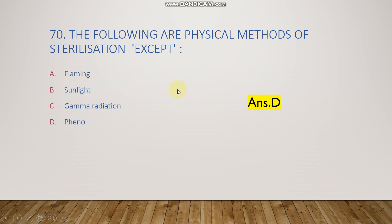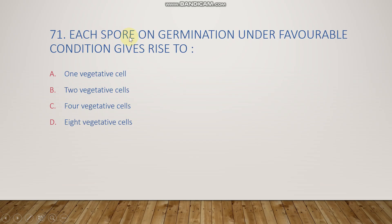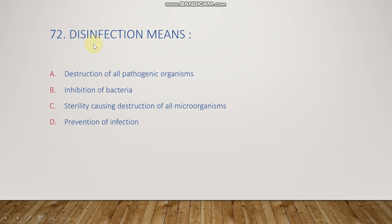The next question: each spore on germination under favorable conditions gives rise to one, two, four, or eight vegetative cells? The right answer is one vegetative cell. After encountering favorable conditions, one endospore germinates into one vegetative cell.